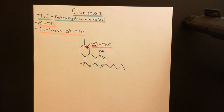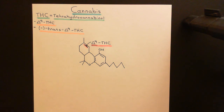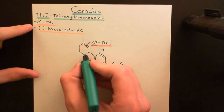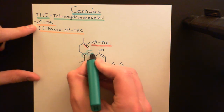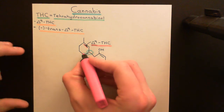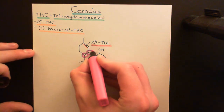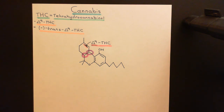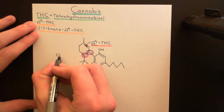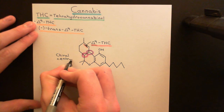To answer what the negative trans delta-9 tetrahydrocannabinol is requires the concept of optical isomers. This molecule, delta-9 tetrahydrocannabinol, actually has four different optical isomers — four different forms that cannot be turned into one another without performing a chemical reaction. Why does it have four different optical isomers? Because it has two chiral centers. This carbon here is a chiral center and this carbon here is also a chiral center, and they are going to give rise to optical isomers of this molecule.